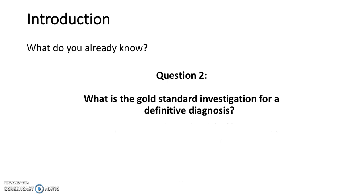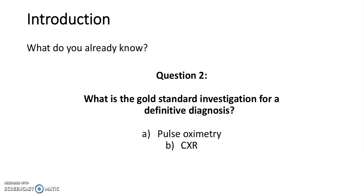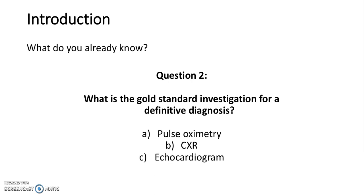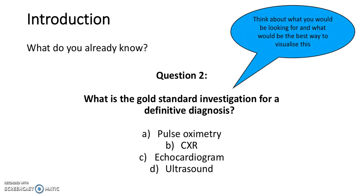Question 2: What is the gold standard investigation for a definitive diagnosis? Is it A, pulse oximetry; B, chest x-ray; C, echocardiogram; or D, ultrasound? Think about what you would be looking for and what would be the best way to visualise this. The answer is C, echocardiogram.